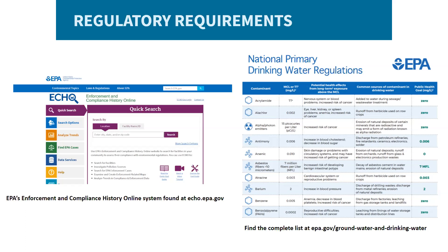The EPA sets standards for more than 90 contaminants in drinking water through National Primary Drinking Water Regulations. These standards seek to protect human health by limiting the allowance of any one contaminant in potable water. This chart shows current maximum contaminant levels (MCLs) or treatment technique (TT) requirements, as well as the public health goal in the far right column. In many cases, the public health goal is zero, while treatment or contamination standards stand marginally above zero. In order to comply with these rules, the EPA also sets water sampling schedules and methods that water systems must follow. More of this will be covered in the session on what frameworks are in place for making sure our water is safe to drink.